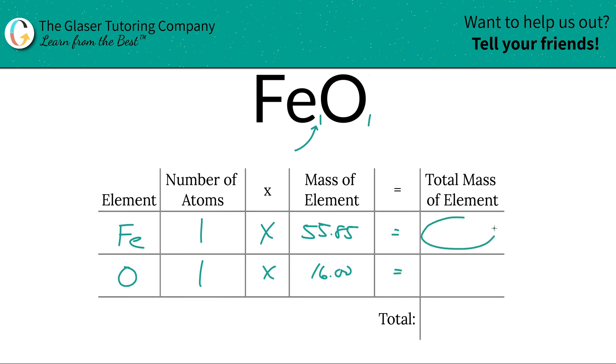And then all we have to do to find the total mass of the element in the compound is just multiply the number of atoms by the mass. So this is going to be 55.85, and then for oxygen, it's 16. And then when you add those two together, that's when you find the total. The total mass here of iron two oxide is going to be 71.85.